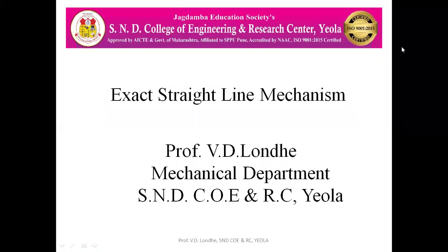Hello everyone, today we are going to see the exact straight line mechanism. A mechanism is the combination of links in which one link is fixed and the other links have relative motion with respect to each other. This mechanism is used for transmitting motion, for example in machines.